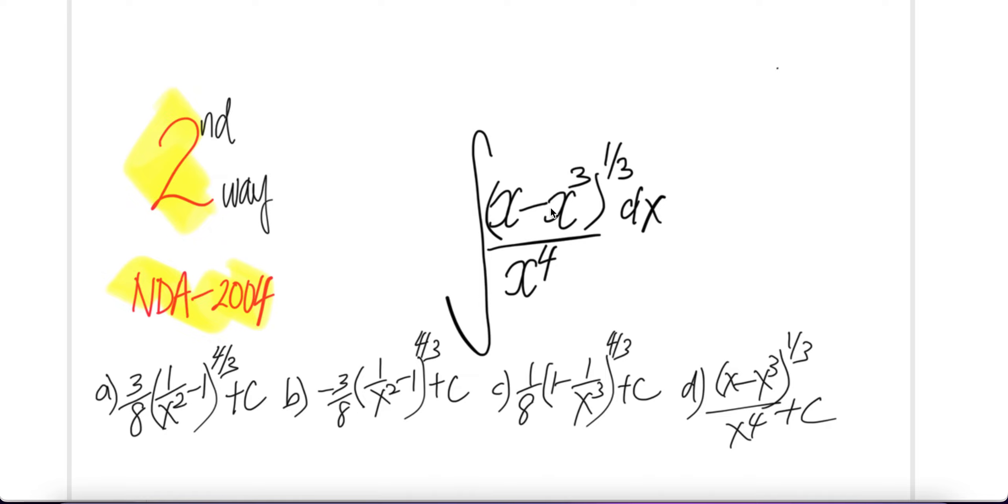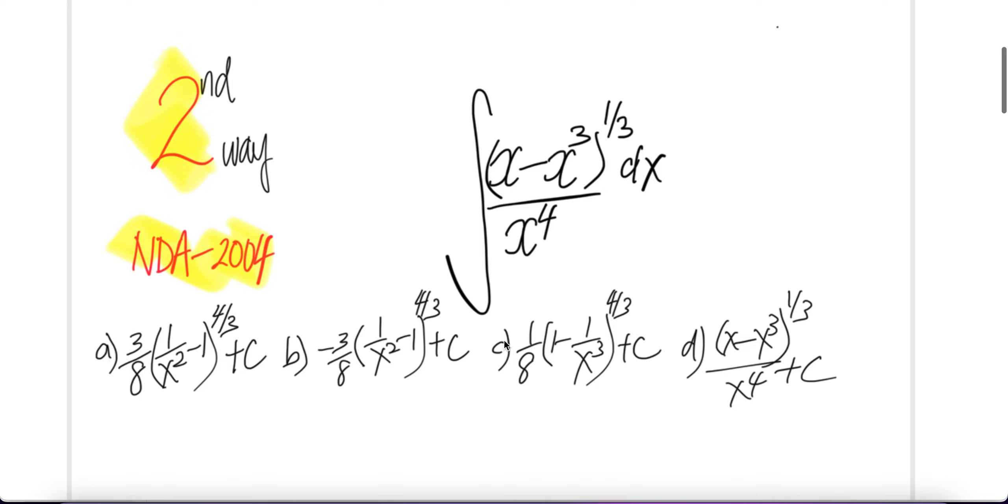Let's look at second way to get the integral of x minus x cube to the power of 1 third divided by x to the power of 4 dx. Problem from NDA-2004. And then find one of your answer here.